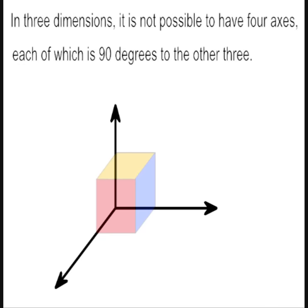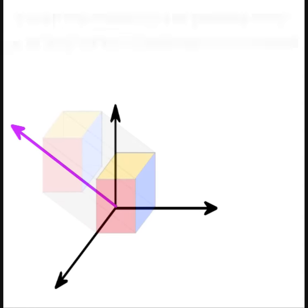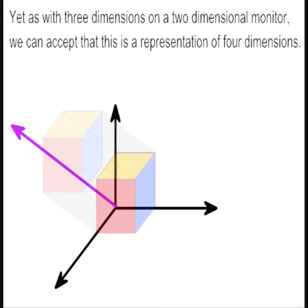In three dimensions, it is not possible to have four axes, each of which is 90 degrees to the other three. Yet as with three dimensions on a two-dimensional monitor, we can accept that this is a representation of four dimensions.